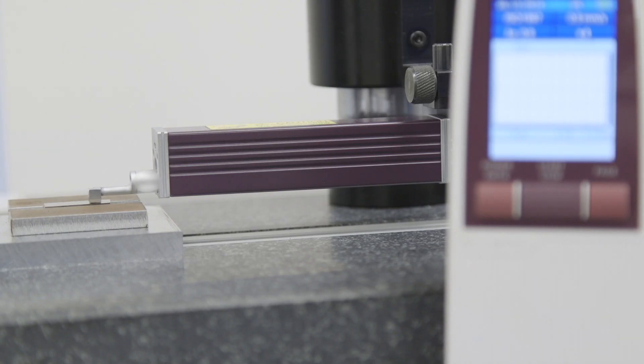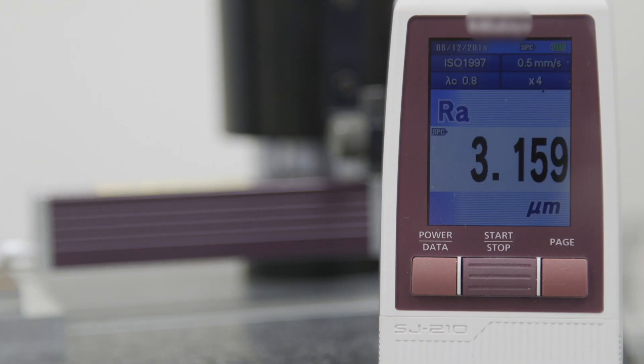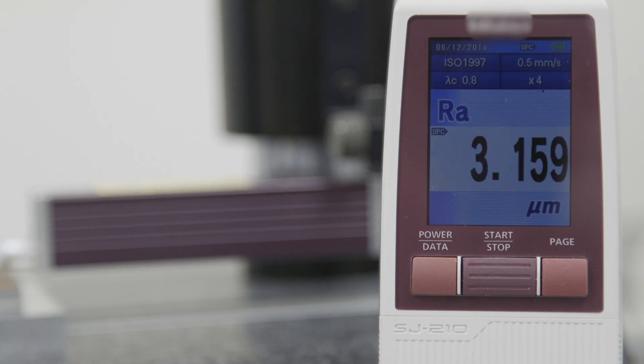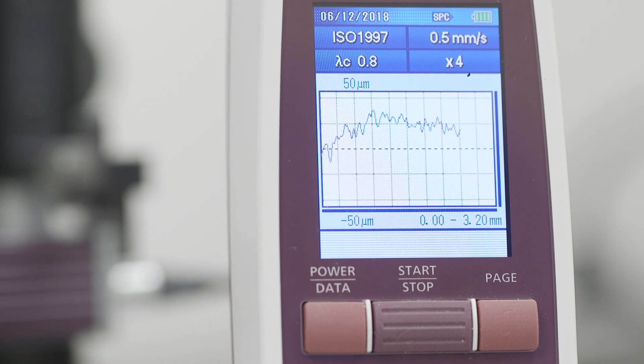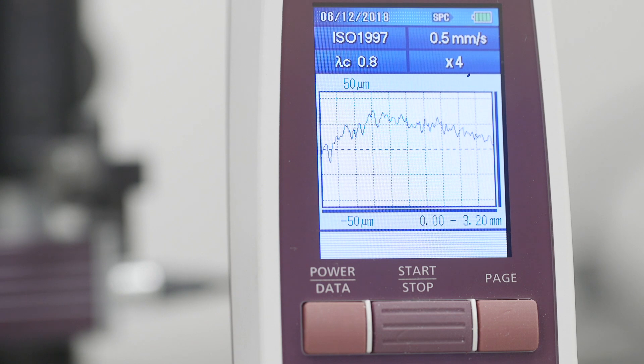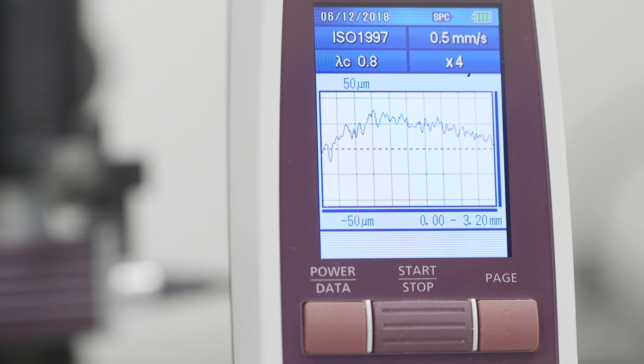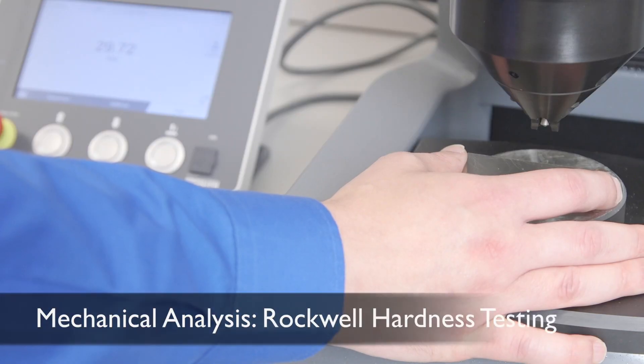This is a stylus profilometer, a contact-type method of measuring the surface roughness of materials. It's currently measuring the surface roughness of the stainless part that we have cut. In this case, the straightness of the cut wall and the surface roughness is meeting the customer specification.